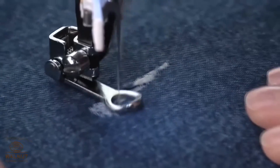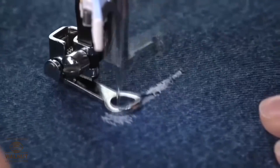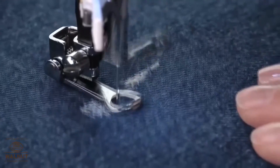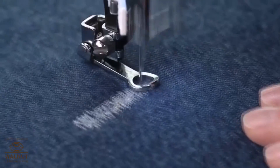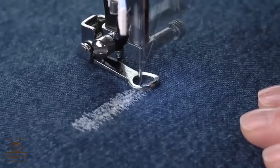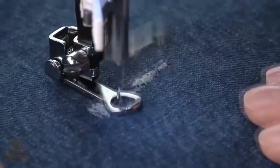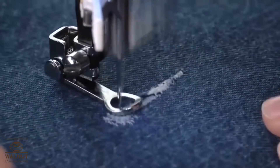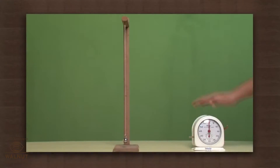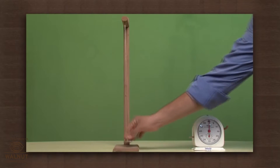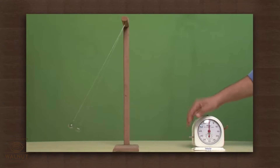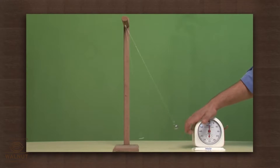How does the needle of a sewing machine move? It moves up and down — this is oscillatory motion. How does a pendulum move? It moves back and forth — this is oscillatory motion.